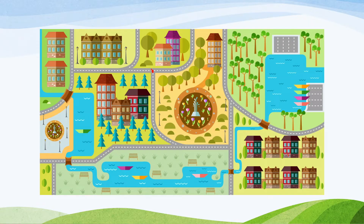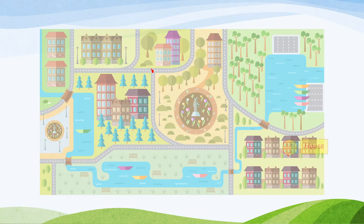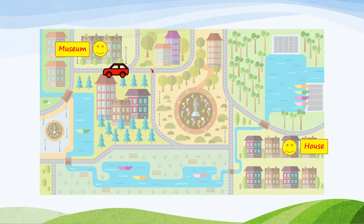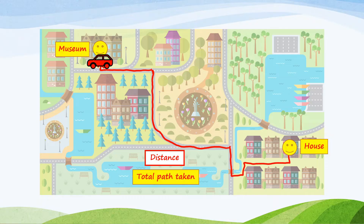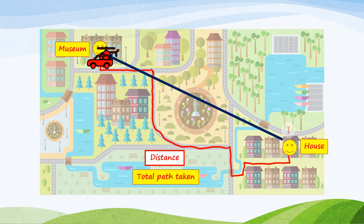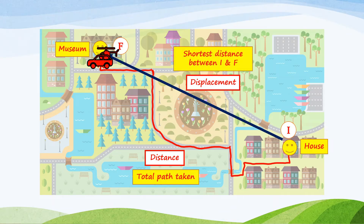One day, Winston's family wants to go to the museum. Here is the city map — this is Winston's house, and here is the museum. Winston's family uses a car and travels along the road to reach the museum. The route along the road is called the distance. Distance is the total path taken along the road. If Winston had a helicopter, it could go directly from his house to the museum in a straight line. Winston's house is the initial point; the museum is the final point. The shortest distance between the initial and final point is called the displacement.